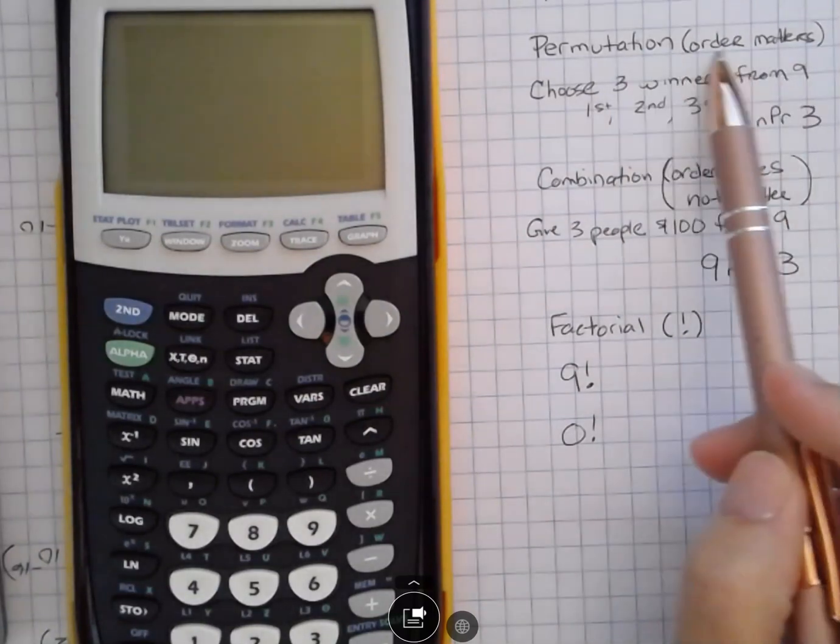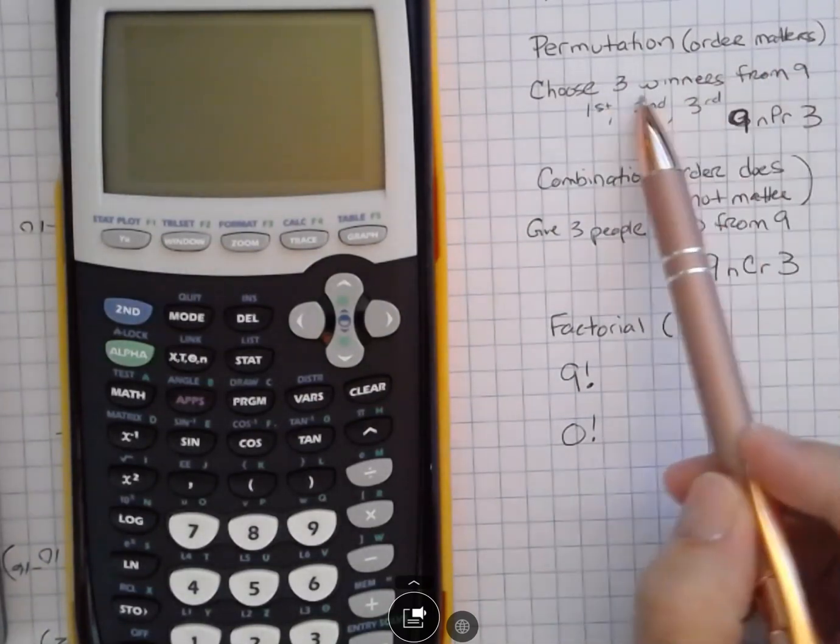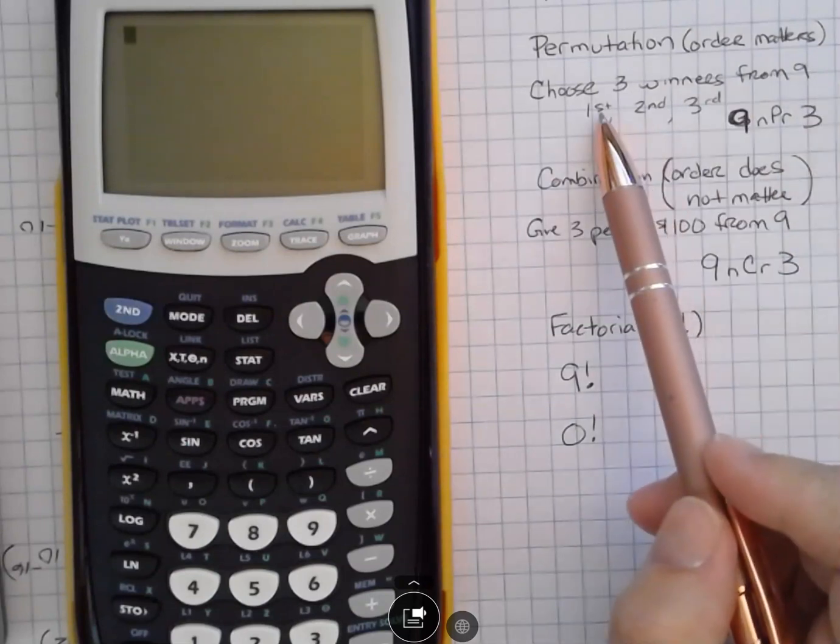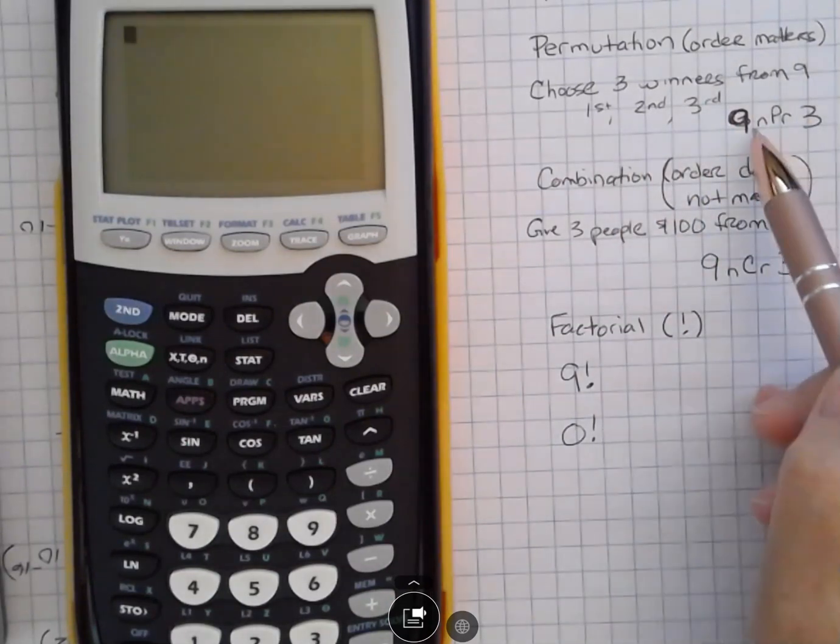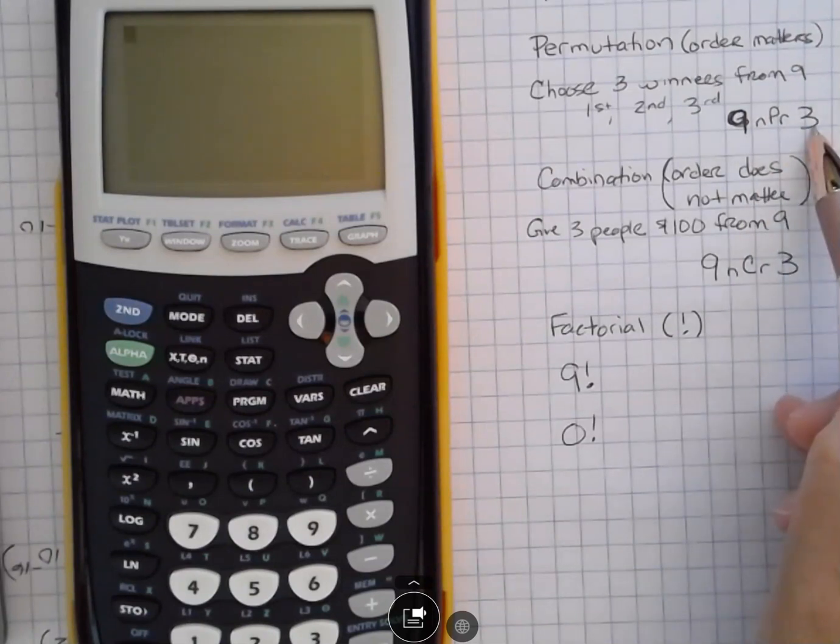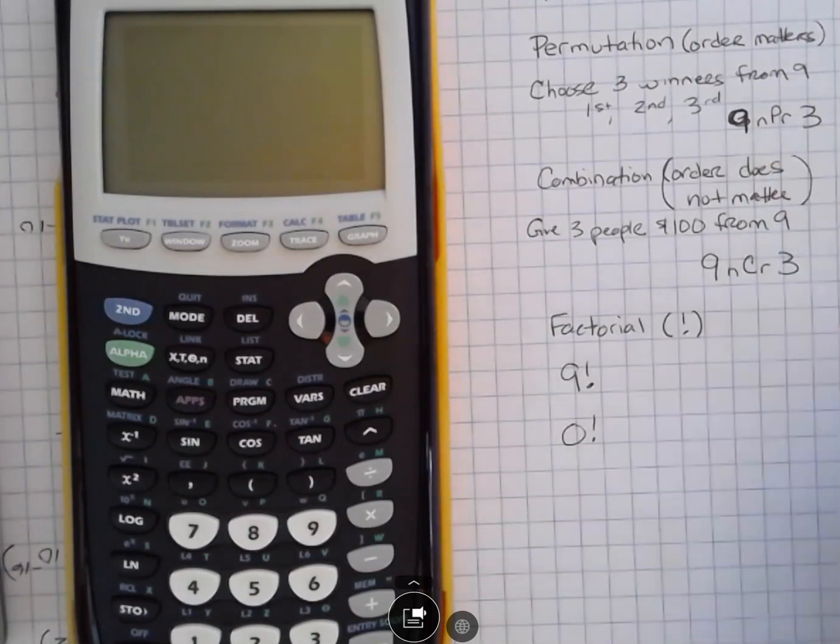Permutation is when order matters. So you're going to choose three winners from nine entrants, but you're going to choose a first, second, and third place like in a horse race or something. And that's going to be nine and then choose three. And we're going to use the nPr button.